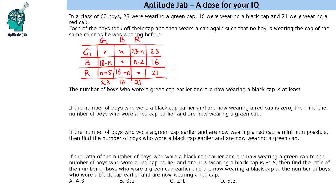Question 1: The number of boys who wore a green cap earlier and are now wearing a black cap is at least how many? This is the value n. All cell values must be non-negative. The cell n minus 2 must be at least 0, so the minimum value of n is 2. The answer is 2.